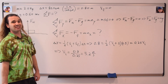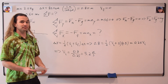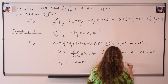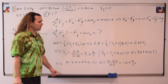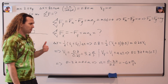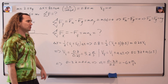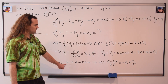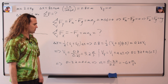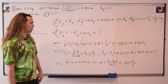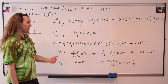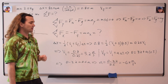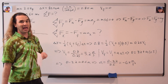Now we solve for the acceleration using a different UAM equation: velocity final equals velocity initial plus acceleration times the change in time. Velocity final is zero, velocity initial is 3.2, and the change in time is 0.5 seconds. Subtracting 3.2 from both sides gives negative 3.2 equals 0.5 times the acceleration. Dividing by 0.5 gives the acceleration equals negative 3.2 divided by 0.5, or negative 6.4 meters per second squared. That is the acceleration in the x direction.